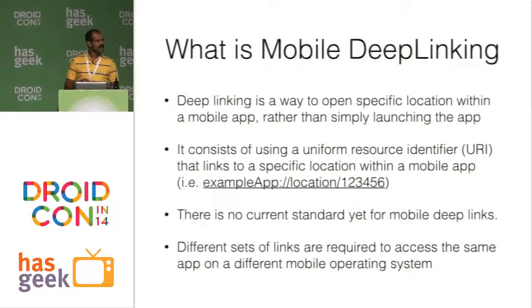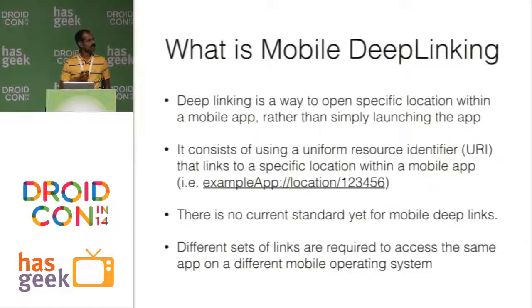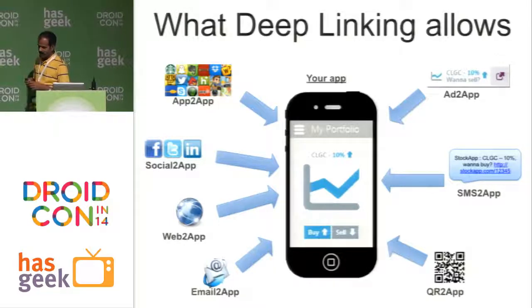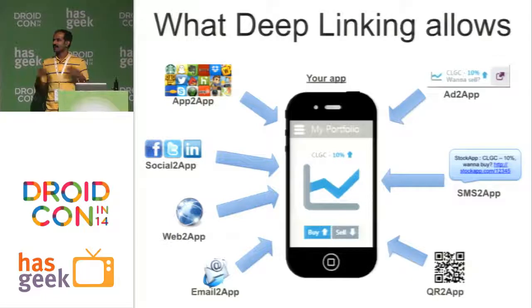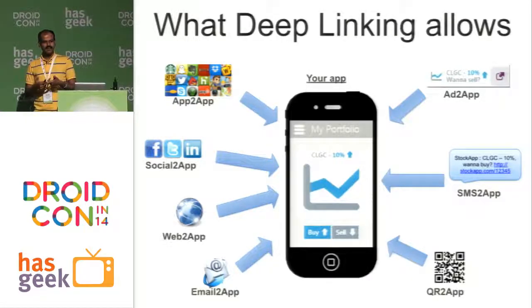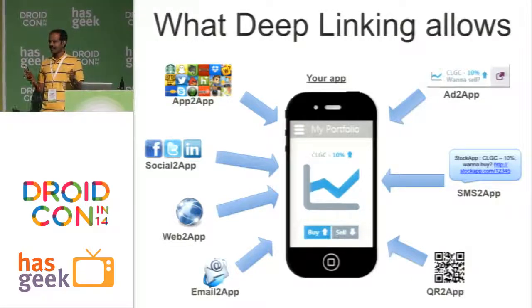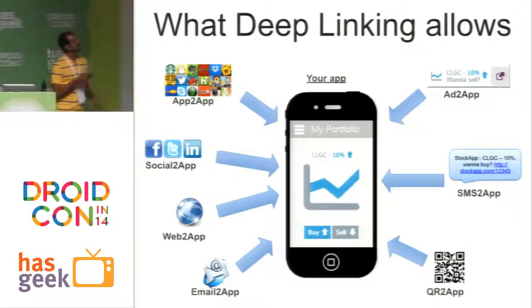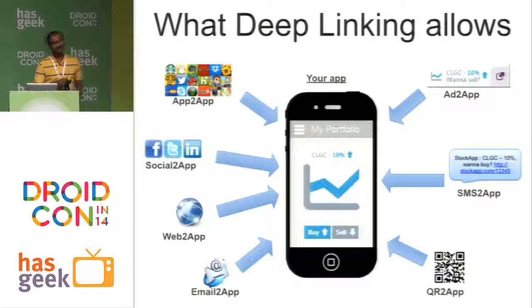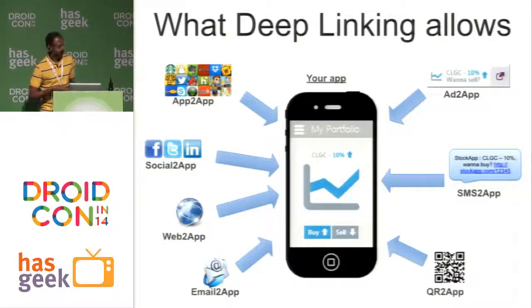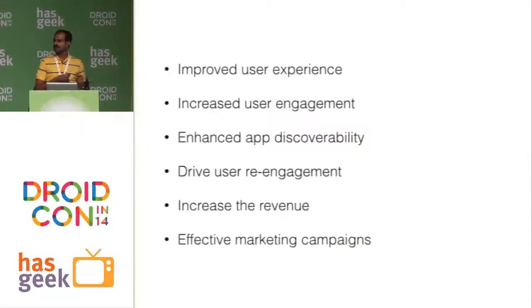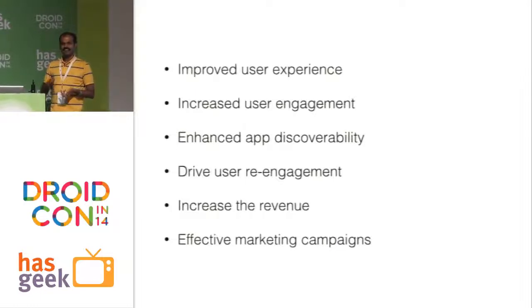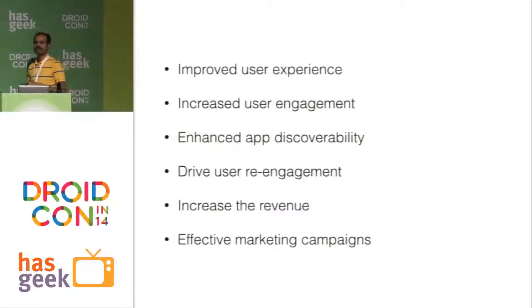Today there are no set standards, but typically we follow a URI scheme. In a nutshell, deep linking allows you to get the user back to your app from multiple sources — be it a link on an SMS, an email, an ad, or anything else on mobile. You are getting the user back to your app again and again from multiple sources. The advantages are manifold: your engagement increases drastically, and the amount of time the user spends on your app shoots up drastically.